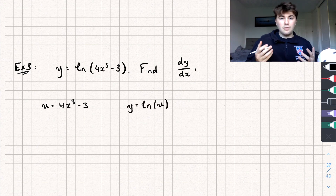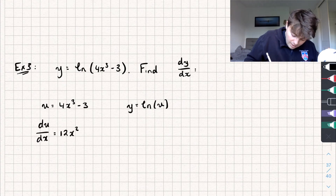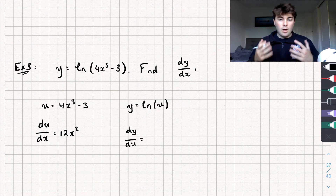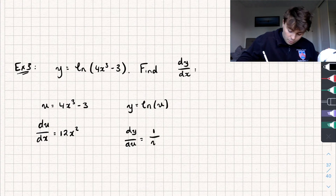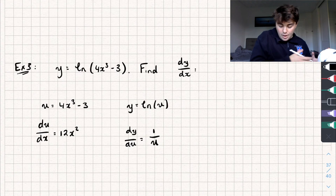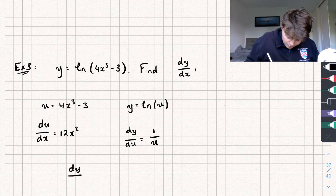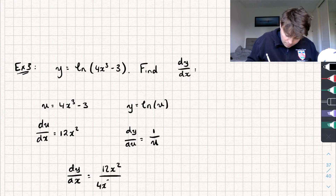So du by dx is equal to 12x squared. And dy by du — the derivative of the natural log of u — is just 1 over u. I have a video explaining why that is if you want to check that out. So to find dy by dx we multiply these together and get dy by dx equals 12x squared over u, and u is just 4x cubed minus 3.